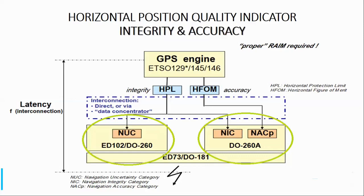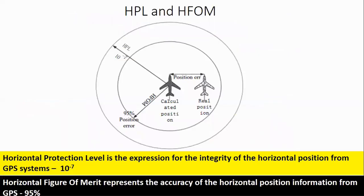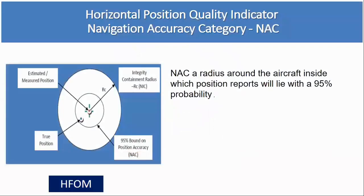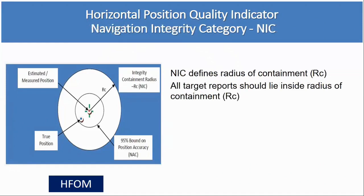Horizontal protection level is the expression for integrity. The true position of aircraft outside the radius of containment will occur only at 10 raised to the power of minus 7 per flight hour. Horizontal figure of merit represents the accuracy of the horizontal position of aircraft. 95% of the time, the real position of aircraft and the calculated position by GPS will lie within the radius of containment RC. The parameters — horizontal position quality indicator, integrity and accuracy — are encoded in the transmitted message from the aircraft. Navigation accuracy category is a radius around the aircraft inside which aircraft position reports will lie with a 95% probability. Navigation integrity category defines the radius of containment RC. All target reports should lie inside the radius of containment RC. The NIC value is important in ensuring the safety of the system by limiting the probability of false targets being established.